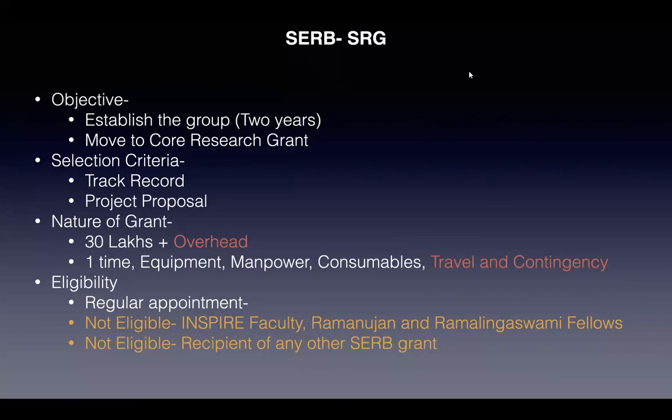Before we start to talk about the challenges and solutions, I just wanted to give an overview of this particular grant. Although all of this information is already available on the SERB website, I thought it would be a good idea to collate it here and discuss a little. The objective of this grant is two-fold: one is essentially to establish the group within the two years of this grant, and the next is to move on to the Core Research Grant. The selection criteria as mentioned by SERB is the track record of the candidate who is applying and also the quality of the project proposal, which is similar to several other grants.